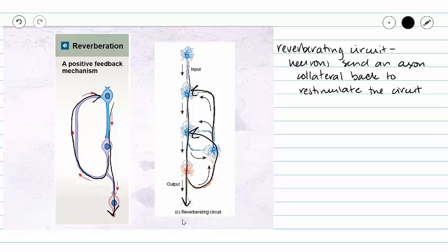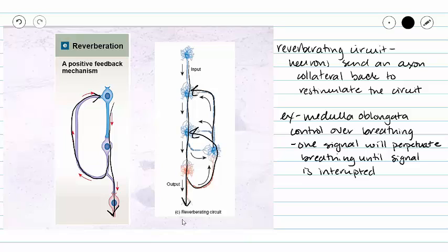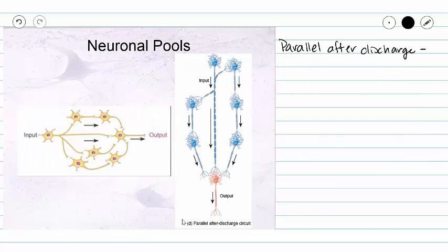A good example is medulla oblongata control over breathing. So our medulla sends one signal that says breathe, and then that signal doubles back on itself and continues to re-stimulate the circuit until the pathway is interrupted. That interruption may come from a stretch receptor, chemoreceptor, or baroreceptor as we mentioned in our previous example of a converging circuit.